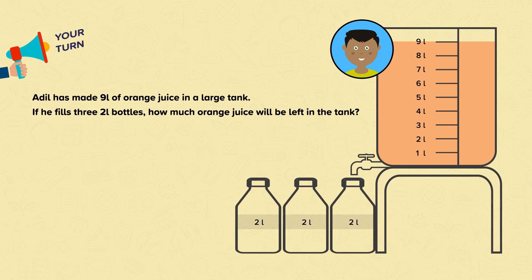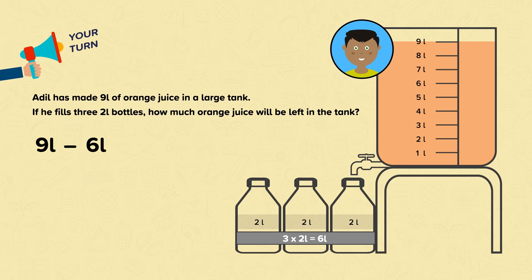Now it's your turn. If he fills three 2 liter bottles, how much orange juice will be left in the tank? Pause the video and have a go. Three lots of 2 liters is 6 liters. So to solve the problem you should have done 9 liters subtract 6 liters and you should have got the answer 3 liters. Well done if you did.